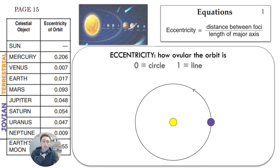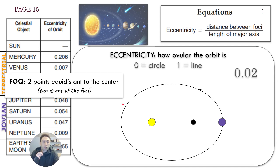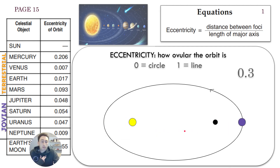The foci are two points that are equidistant to the center of the orbit. The sun is at one of the foci, and there's another imaginary point equidistant with the sun to the center of the orbit. You take the distance between the foci and divide it by the length of the major axis — from the longest points in the orbit — and that gives you the eccentricity. The more eccentric the orbit, the more distance there will be between the foci.